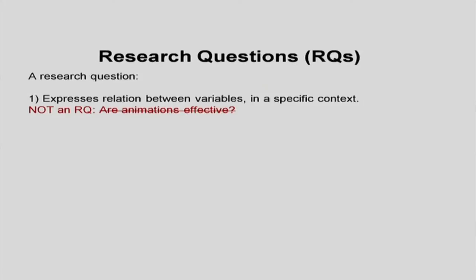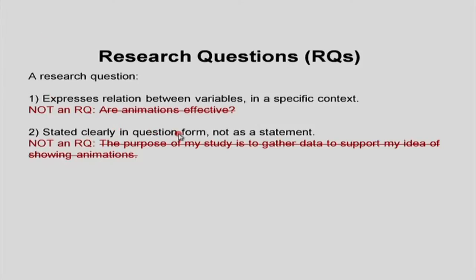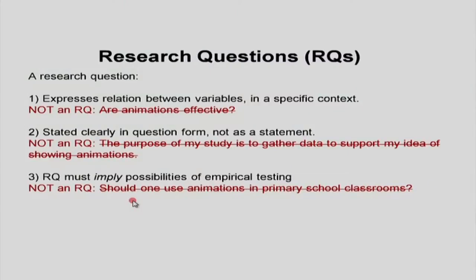A research question should have certain characteristics. It should express a relation between two or more variables in a specific context. So 'are animations effective?' is not a valid research question because it talks about animations and effectiveness but is not at all specific. The second point is that a research question should be stated clearly in the form of a question, not a statement. You should not say 'the purpose of my study is to gather data to support my idea of showing animations' — that is not a research question, that is one of the steps you will do.